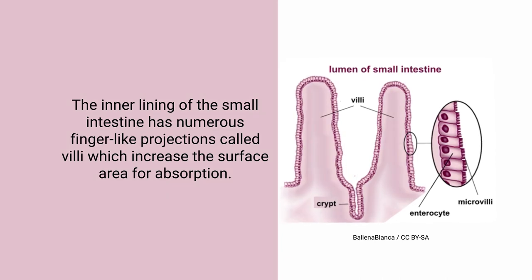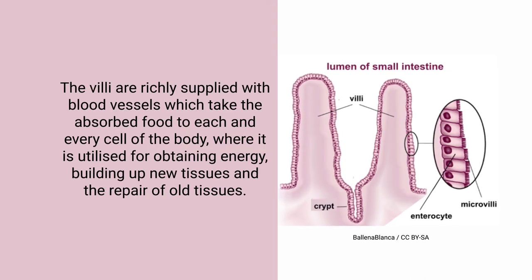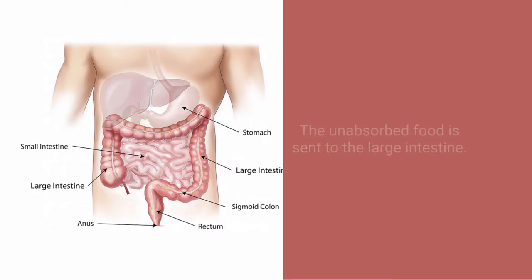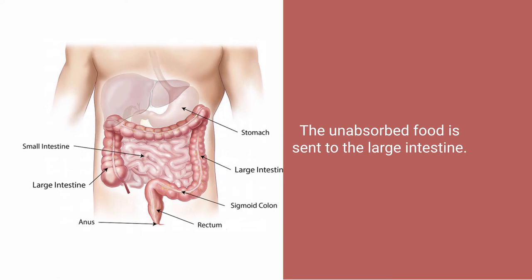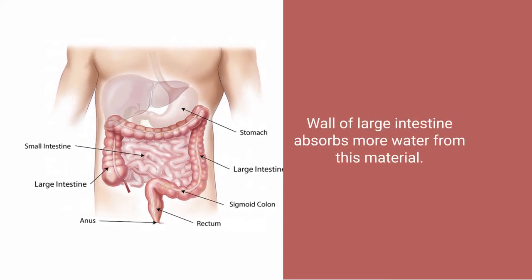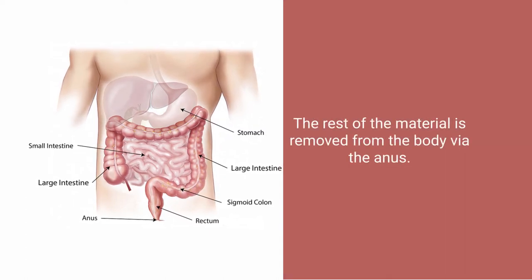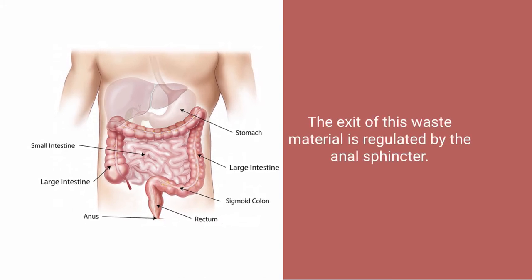The intestine performs absorption through finger-like structures on its inner lining called villi. Villi are flexible, increasing the surface area of the intestine, and are richly supplied with blood vessels — so whatever villi absorb directly reaches the blood and from there to everywhere it can be used for energy, building new tissue, or repairing old tissue. Whatever remains unabsorbed is sent to the large intestine where water is absorbed.